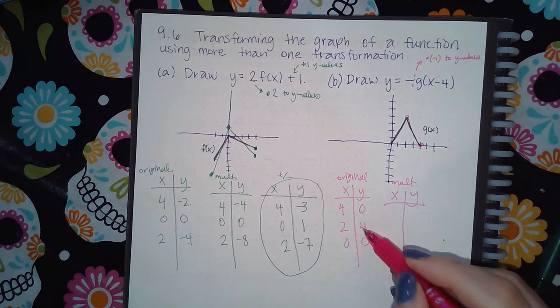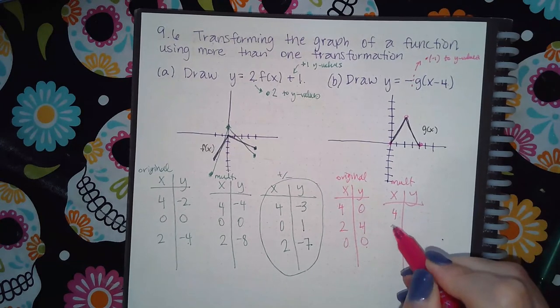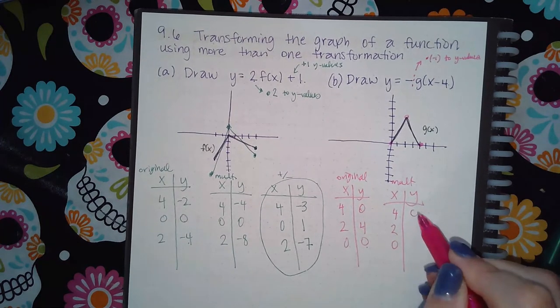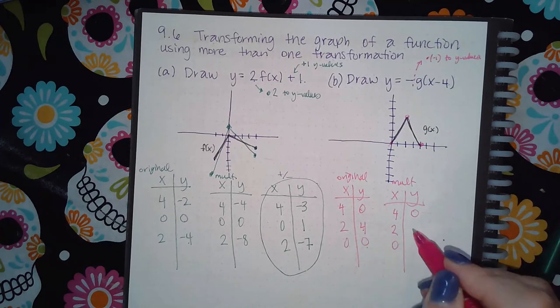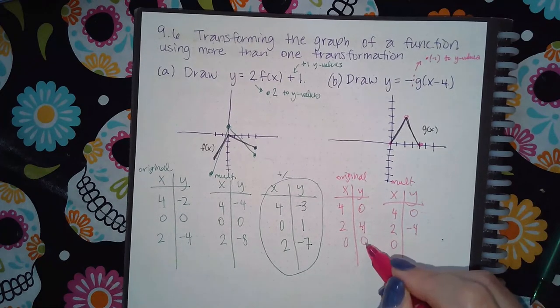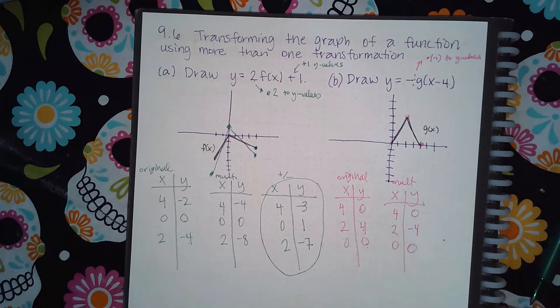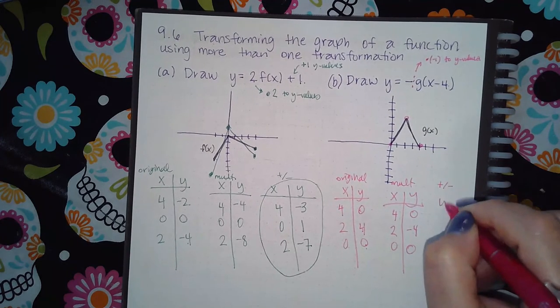So then I'm going to take each one of these, and I'm going to multiply it by a negative. Well, zero times negative is still zero. Four times negative one is negative four, and zero times negative one is still zero. Then I'm going to deal with the adding and subtracting.